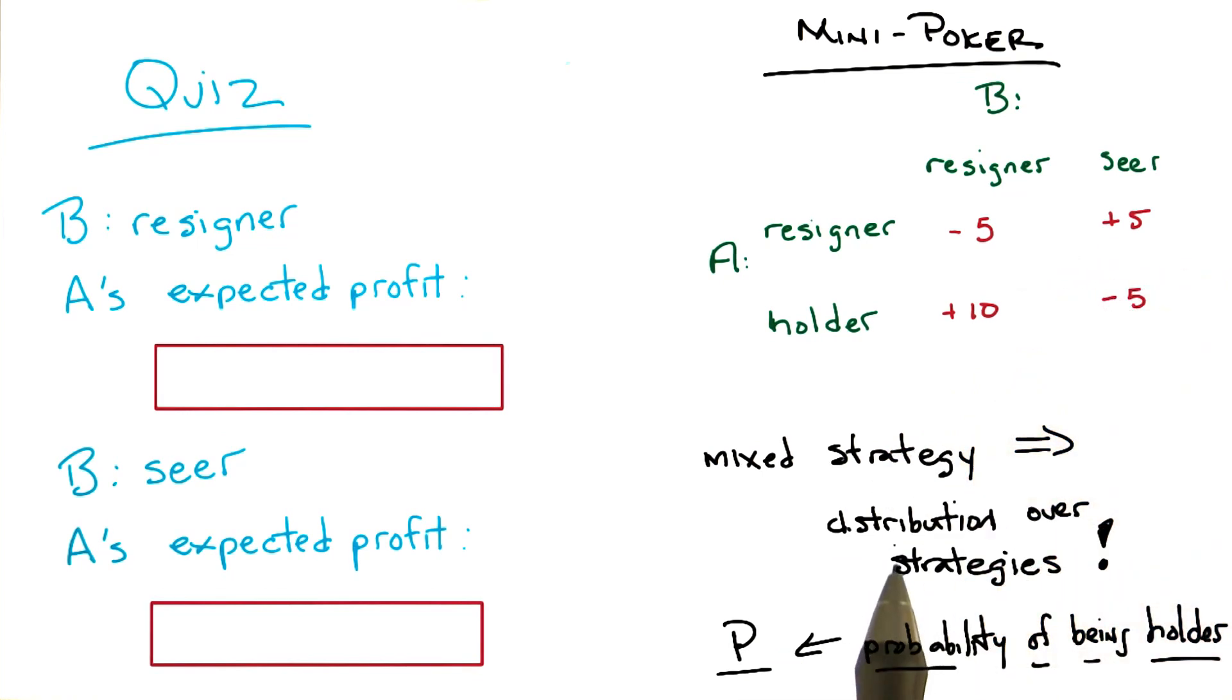So in this case, we're going to choose P to represent the probability for A of choosing to be a holder rather than a resigner. And so P can be probability 0, or it could be probability 1, or any value in between. You with me on that? Yeah, that's neat. Okay, good.